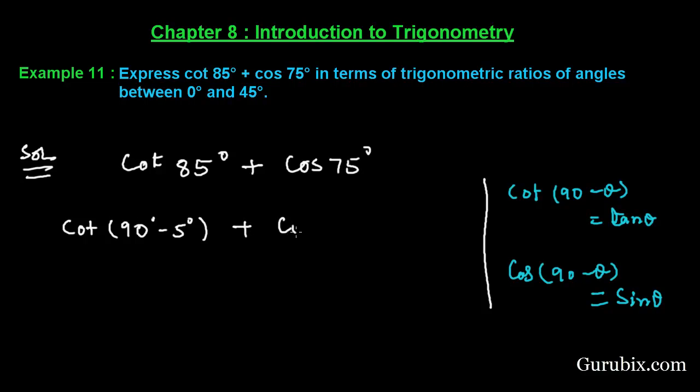Here we have cos(90° - 15°). Now we can apply these formulas, then it will be tan 5° and here we have sin 15°. Now you can observe that 5° and 15°...